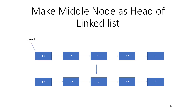Hey everyone, welcome to Coding Simplified. Today we will see how we can make the middle node the head of a linked list. Our linked list has 5 elements: 12, 7, 13, 22, and 8, and we want to make the middle node the head. The middle node is 13, so 13 will become the head node and all other items will shift by one. Now you can see 13 as head, pointing to 12, which was the earlier head. So this is our aim.